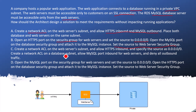Option C says create a network ACL on the web server subnet and allow HTTPS inbound. Option D says open the MySQL port on the security group for the web server and set the source. I've highlighted the main components and we will go to the next slide, and after everything is clear we will find the correct answer.